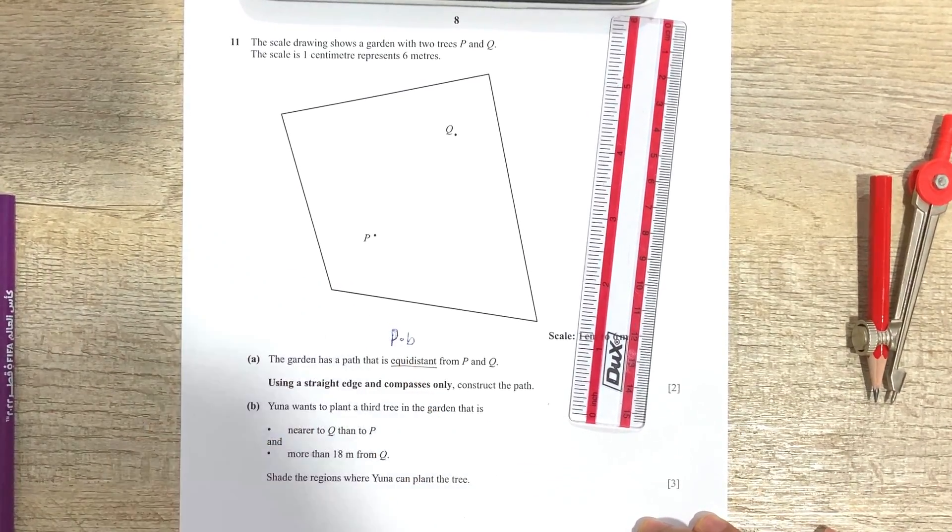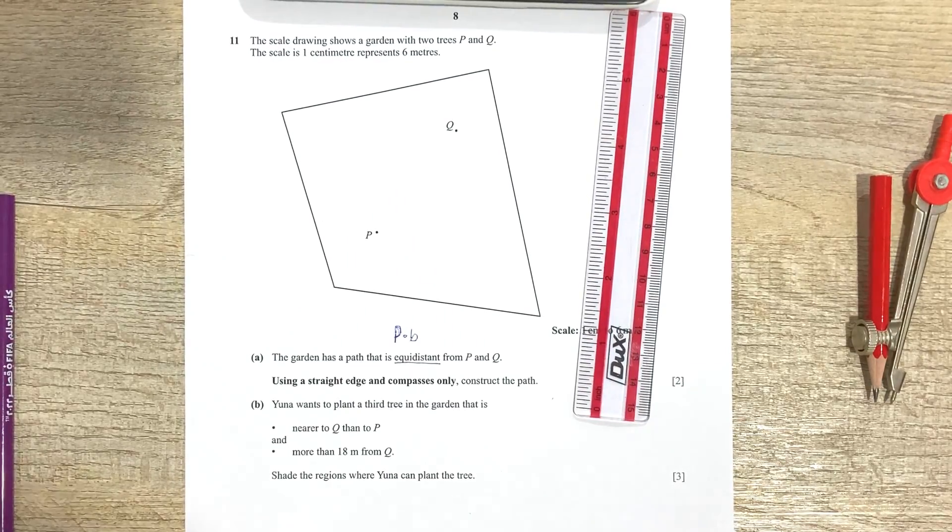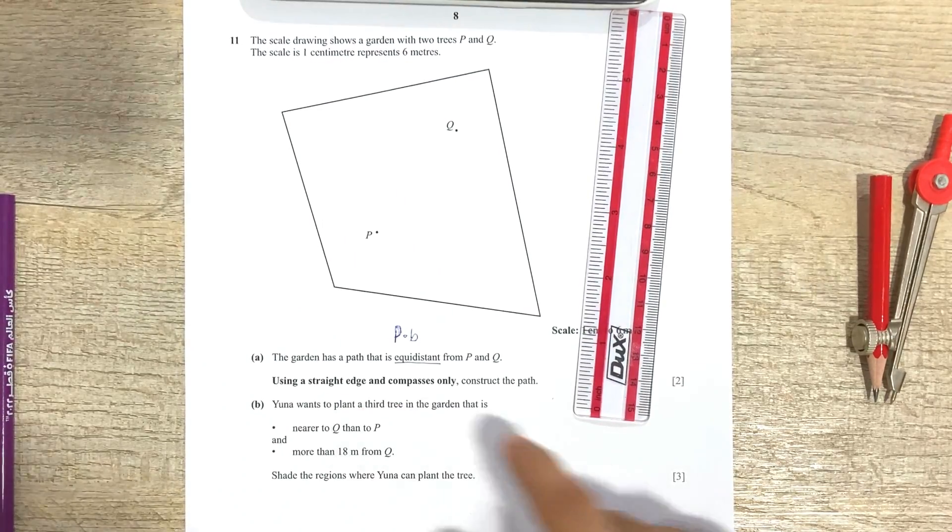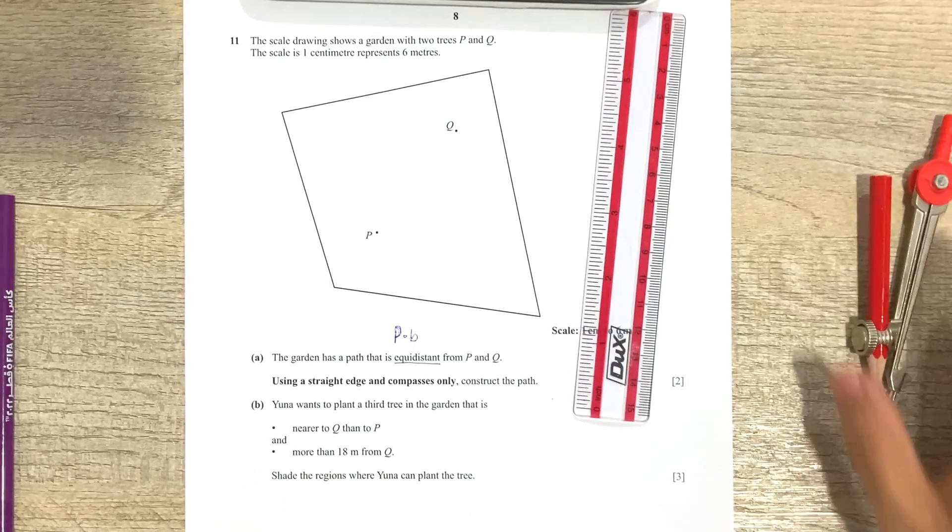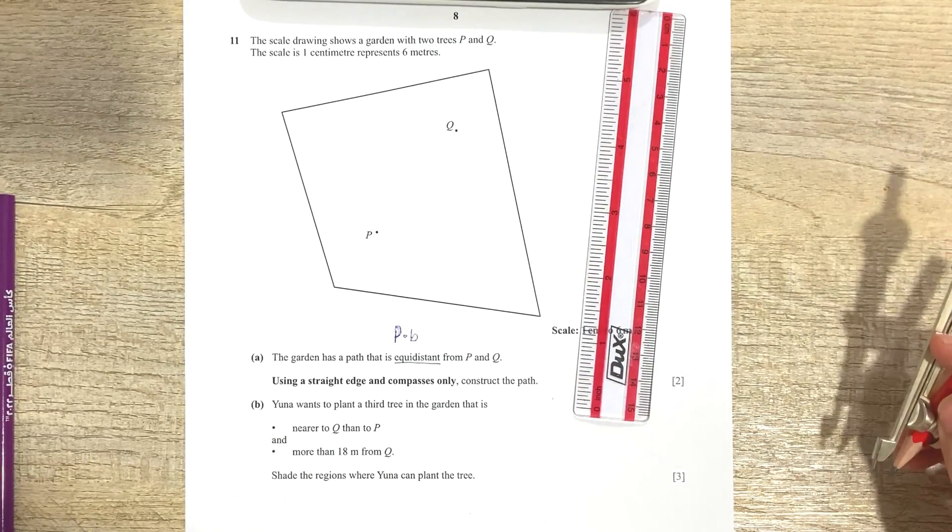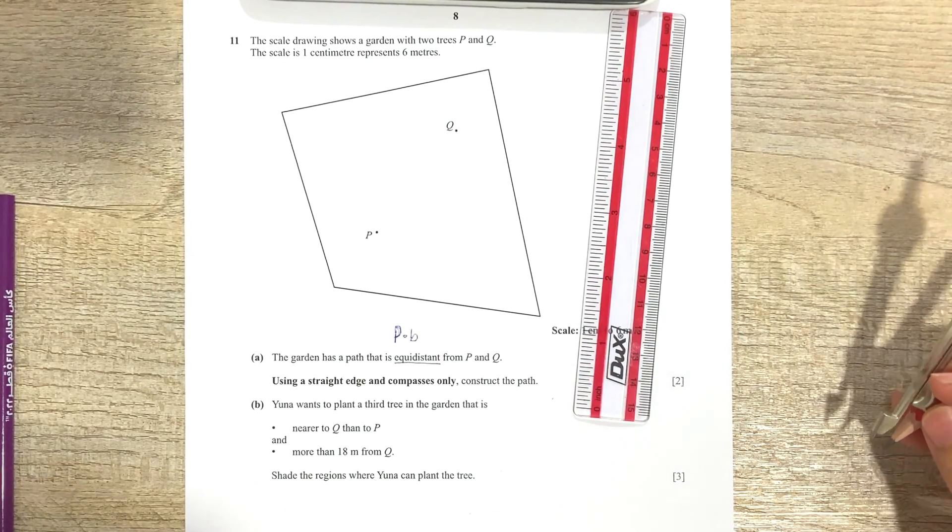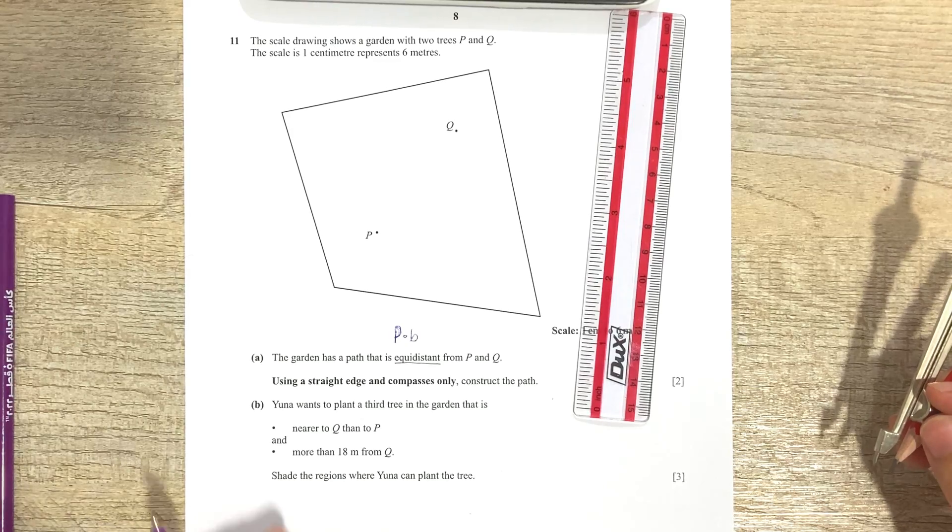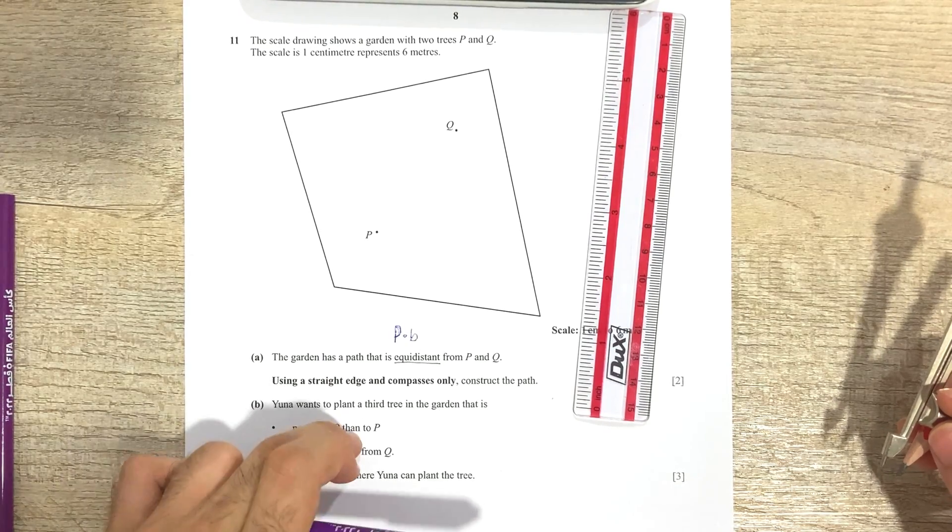Okay, so I'll just write the short form of it: perpendicular bisector is what we're gonna make over here. Then it says using a straight edge and a compass only. Straight edge is basically a scale, compass right over here. You now wants to plant a third tree in the garden that is nearer to Q than to P.